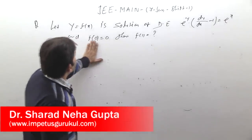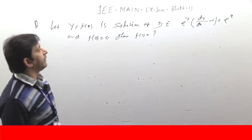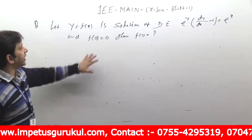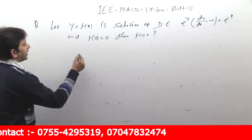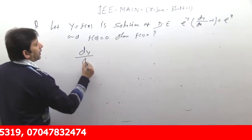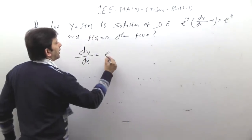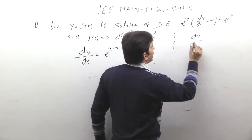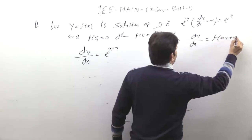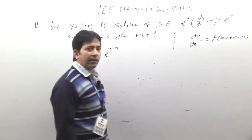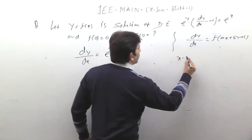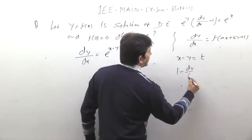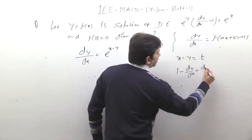Let y = f(x) be a solution of the differential equation e^y · (dy/dx) − 1 = e^x, and f(0) = 0. Find f(1). The question asks for a particular solution. What is given directly? e^y · (dy/dx) − 1 = e^x. If I transfer e^x, I get e^(x−y). Remember, this differential equation is a form reducible to variable separable. If we let x − y = t, then dt/dx = 1 − dy/dx, which means dy/dx = 1 − dt/dx.